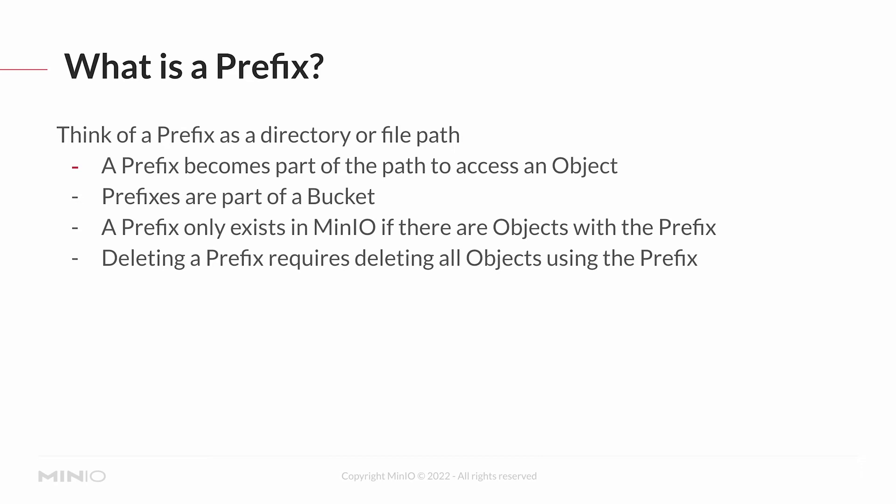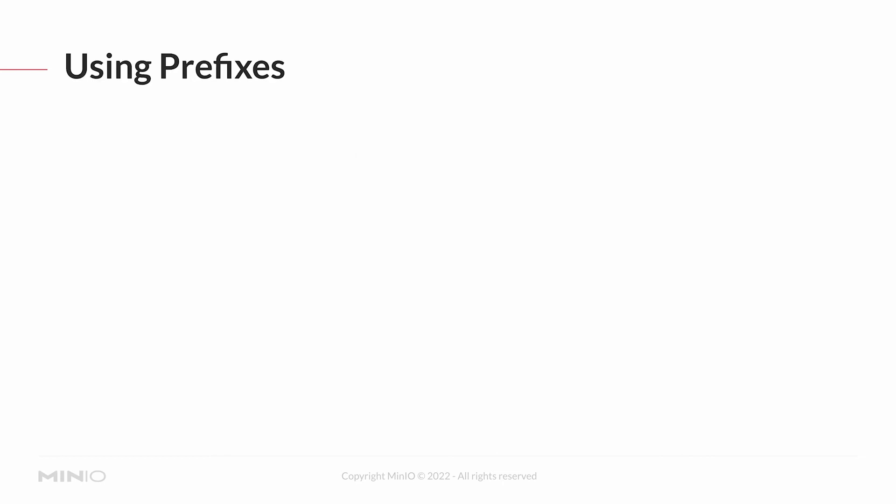Importantly, an object only exists in one prefix. It does not have a way to link an object from one prefix to another, because you can only have a prefix if an object exists under it. The only way to have an object exist in more than one prefix is to actually copy the object, in which case they're technically two separate objects — they'll have separate metadata, separate e-tags, separate version IDs, and all that other stuff. There will be no link between them. So an object only exists in one prefix.